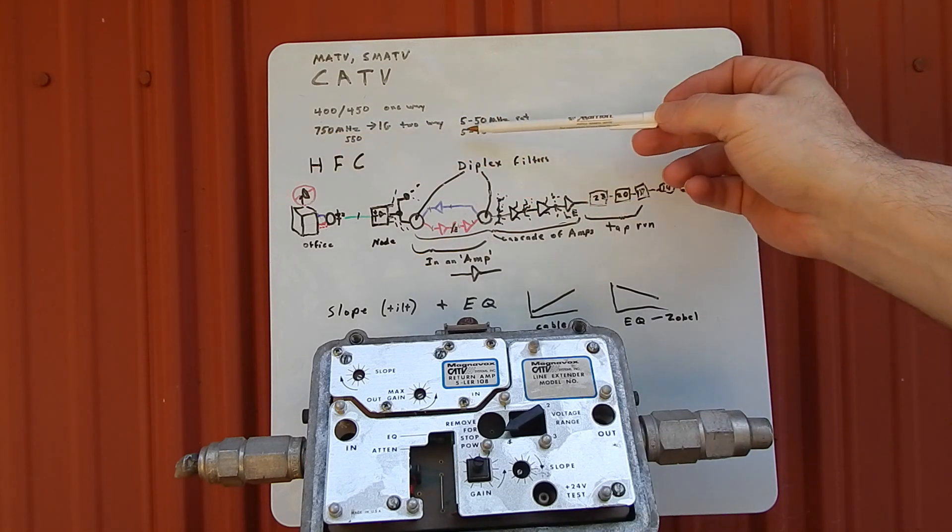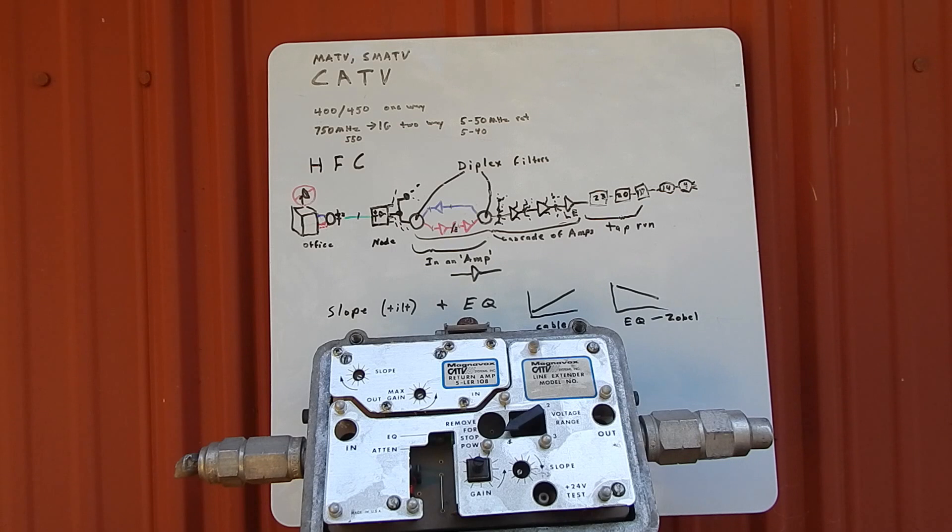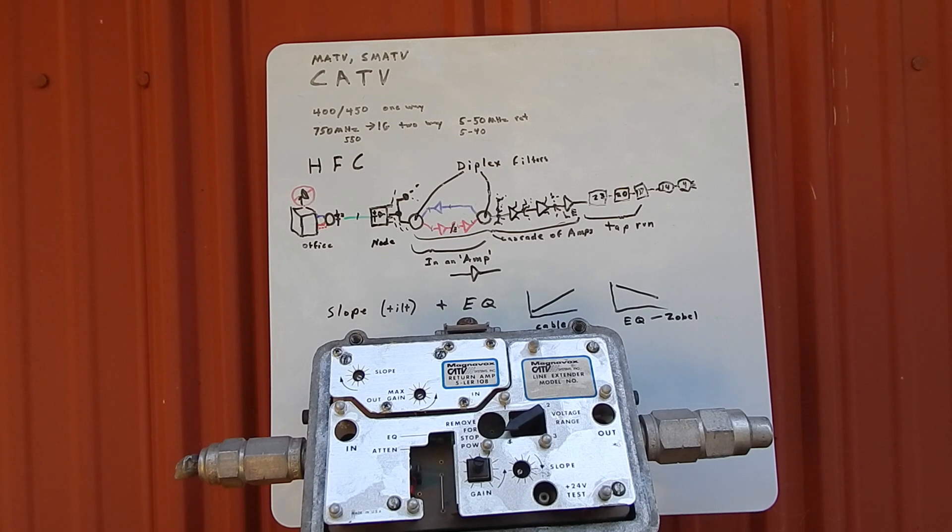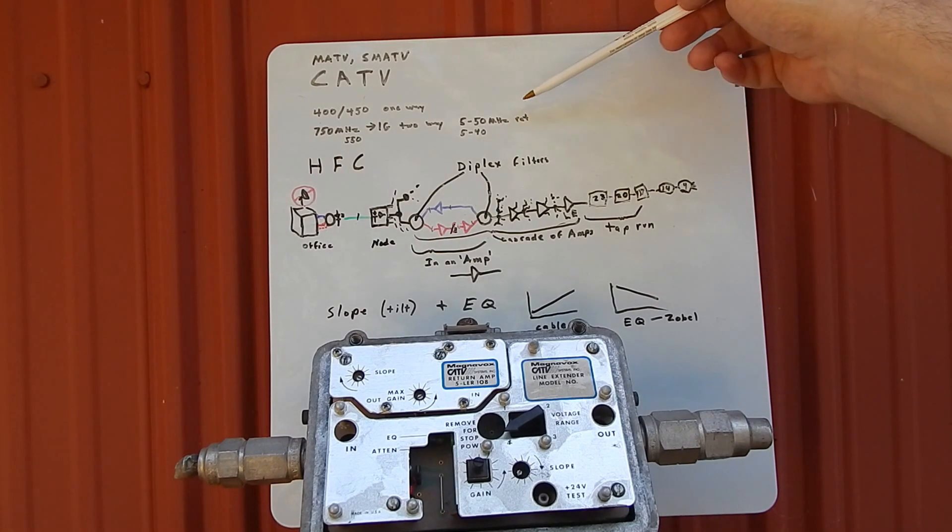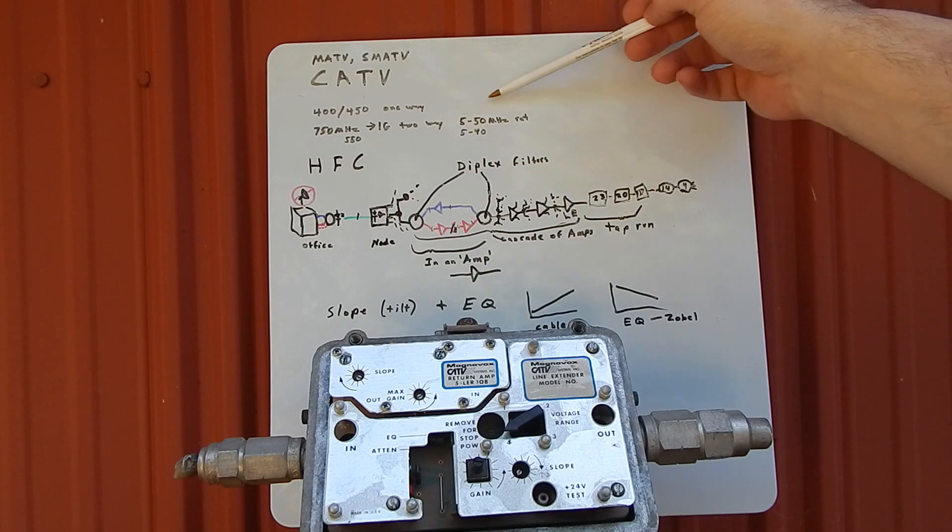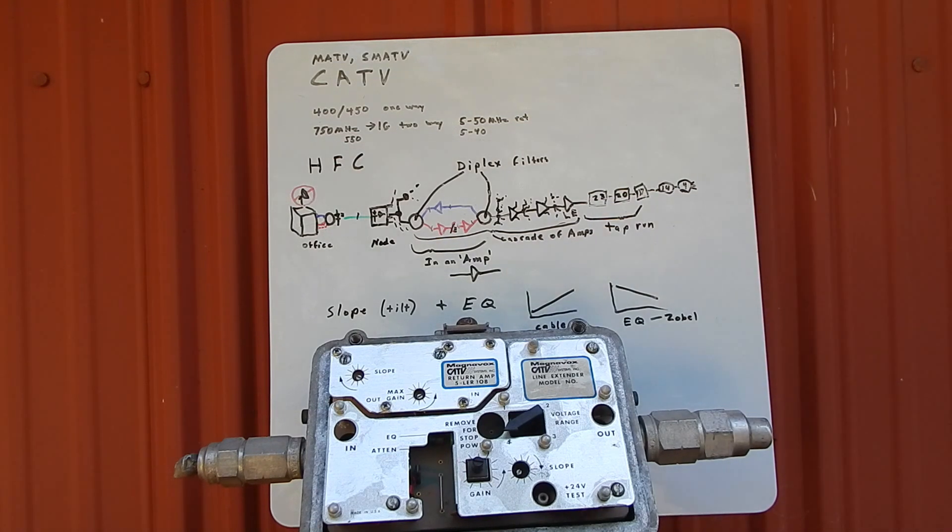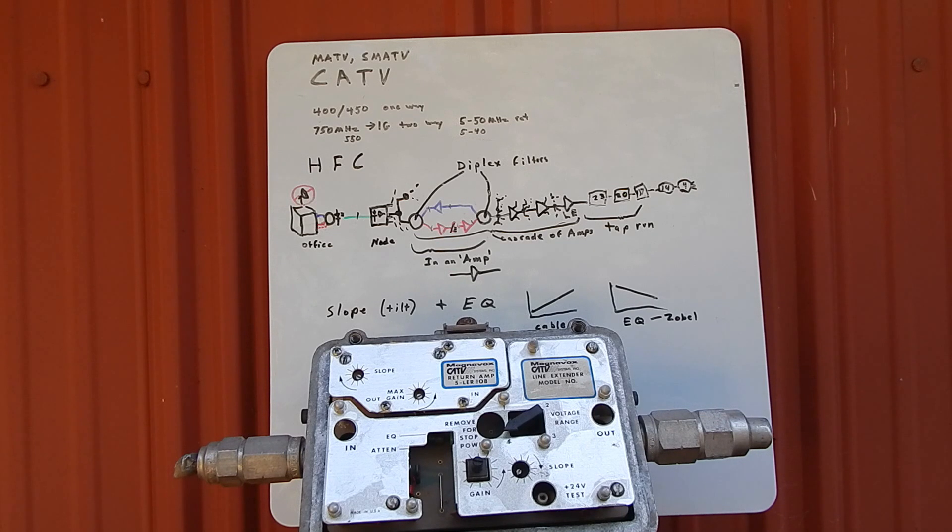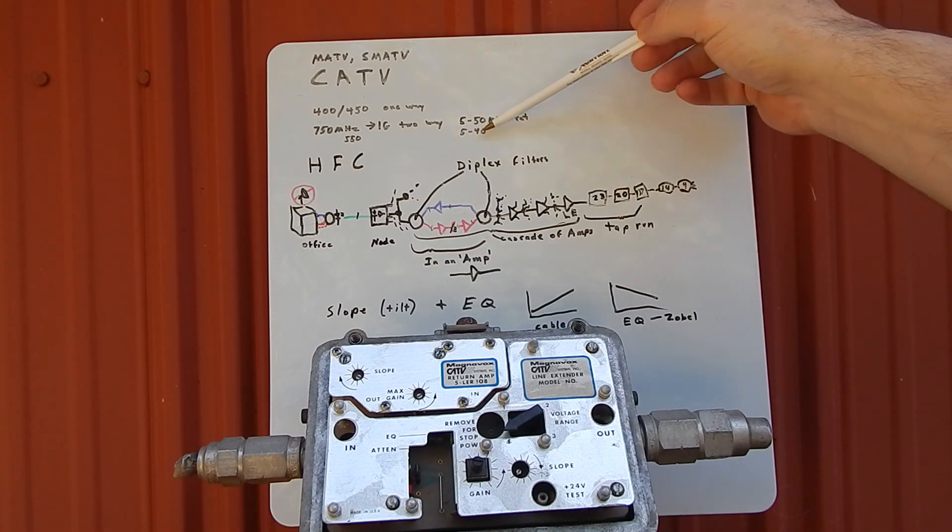The real problem with most of these systems that were built this way, even the 750 megahertz system with a 5 to 50 megahertz return, is if we knew modems were going to be the big thing they are now and that DOCSIS was going to be the be-all and end-all that it's becoming, we would have given ourselves a much bigger return. There's something called a mid-split where your return goes all the way to the mid band, like 175 megahertz or somewhere in there, anywhere in the mid band. That would give you a lot bigger return path.